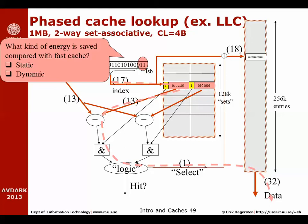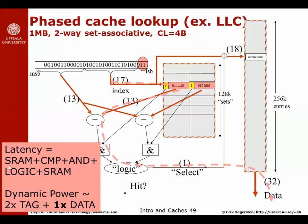With a phased cache design you save dynamic power, not static power, because the total amount of SRAM is the same. However, instead of reading out two data words in parallel you only read out one, so the latency is higher — first the tag SRAM, then compare, then AND logic, then a second SRAM latency. The dynamic power is proportional to the tags plus only one times the data contained in a cache line, and since cache lines tend to be much larger than tag arrays, this can be a big saving.